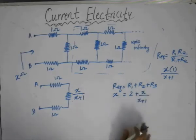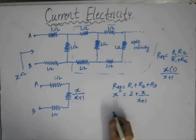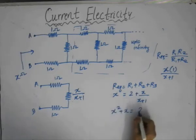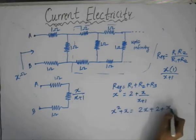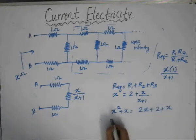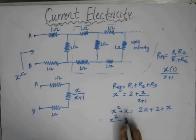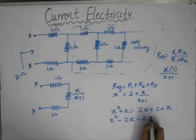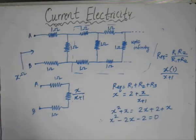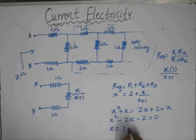We need to solve for the value of x. By solving this algebraic equation, we get x(x+1) = 2(x+1) + x, which gives the quadratic equation x² minus 2x minus 2 equals 0. Solving this quadratic equation, we get two roots: x equals 1 plus or minus square root of 3.